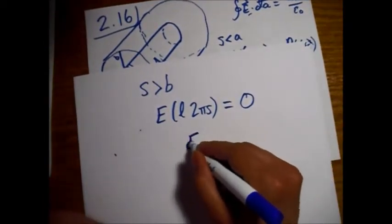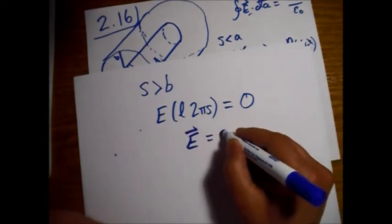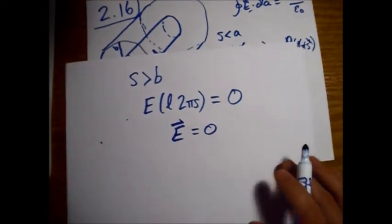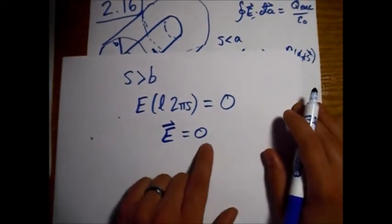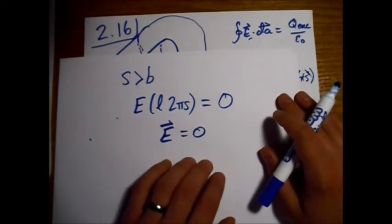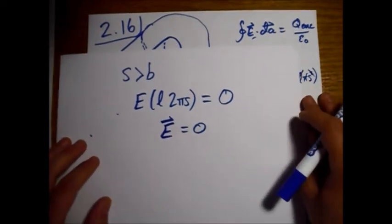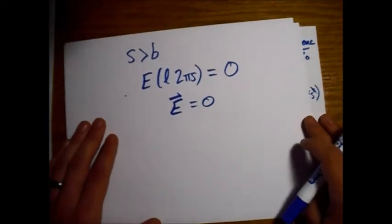It doesn't matter what direction we're talking about now because the total charge enclosed is zero, and we get sort of the null vector for our electric field. Completely zero.